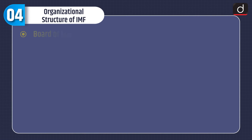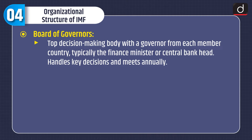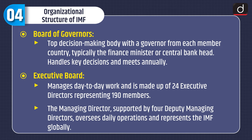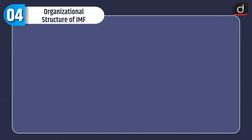Now let's discuss about the organizational structure of IMF. First is the Board of Governors — the top decision-making body with a governor from each member country, typically the finance minister or central bank head. It handles key decisions and meets annually. Second is the Executive Board, which manages day-to-day work and is made up of 24 executive directors representing 190 members. The managing director, supported by four deputy managing directors, oversees daily operations and represents the IMF globally.